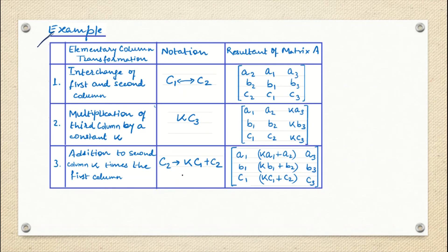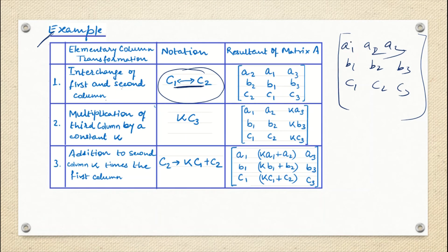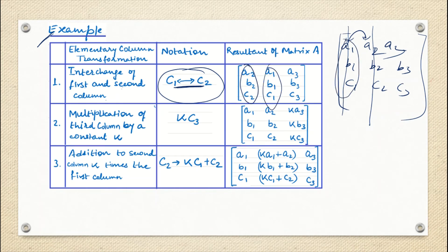Now for elementary column operations, the same three types apply. The first is interchange of columns — for example, interchanging C1 and C2. The original matrix has A1, A2, A3 in row 1, B1, B2, B3 in row 2, C1, C2, C3 in row 3. After interchanging C1 and C2, we write column 2's elements (A2, B2, C2) first, then column 1's elements (A1, B1, C1), and column 3 remains as it is.